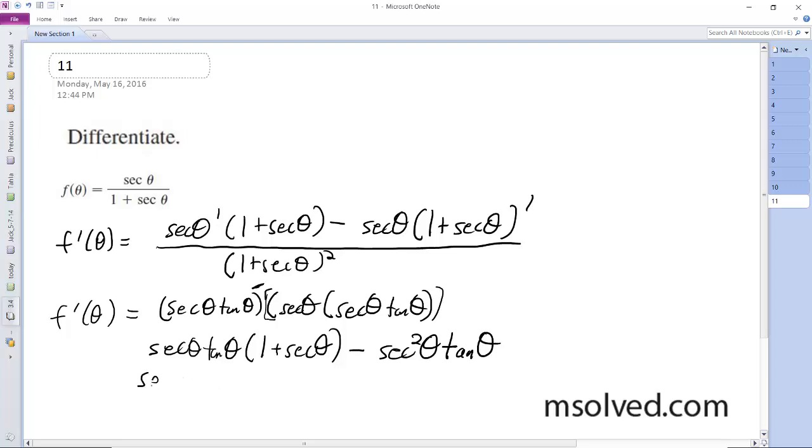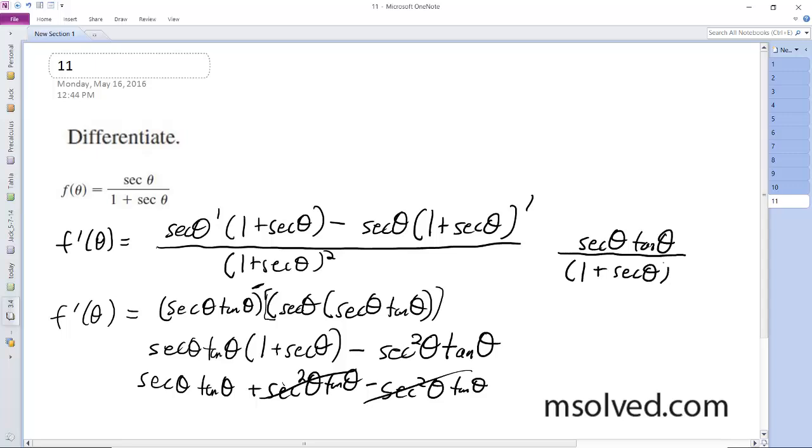So we get secant theta tangent theta plus secant squared theta tangent theta. These cancel out, and we get secant theta tangent theta left. So we end up finally with secant theta tangent theta all over 1 plus secant theta squared. That's it, here we go.